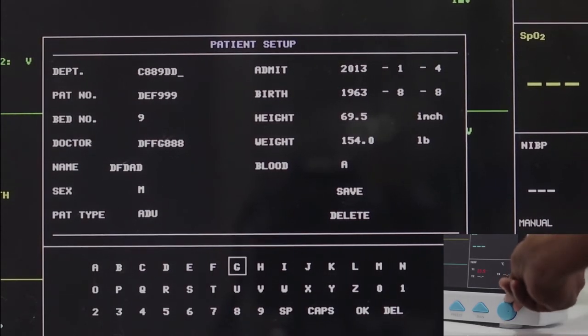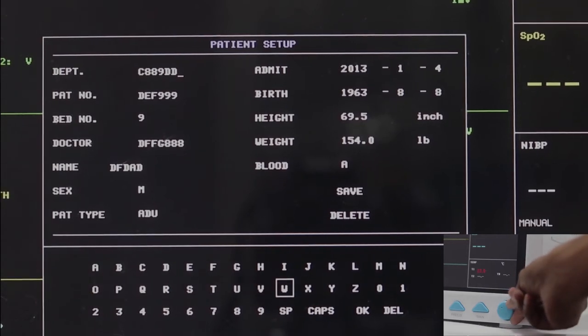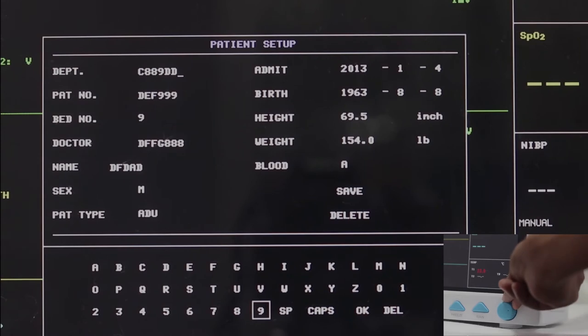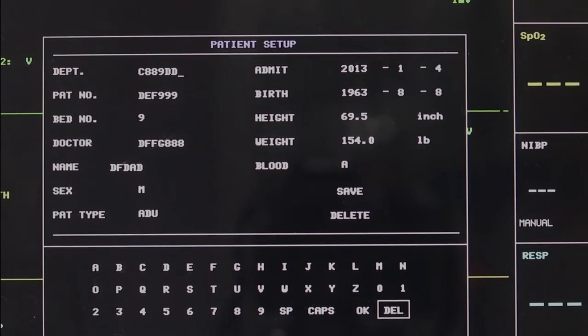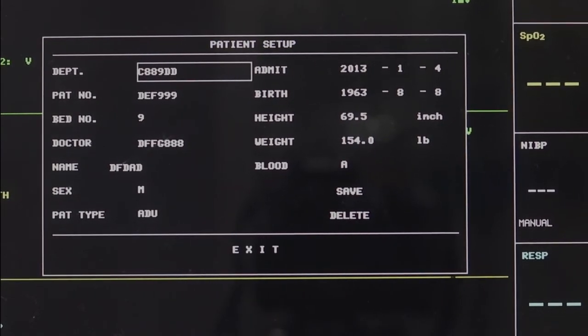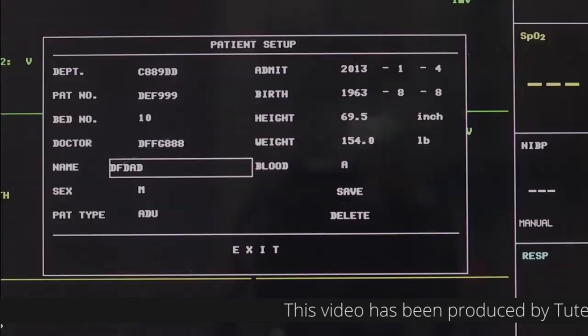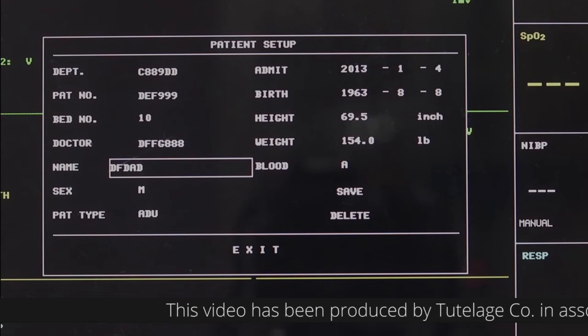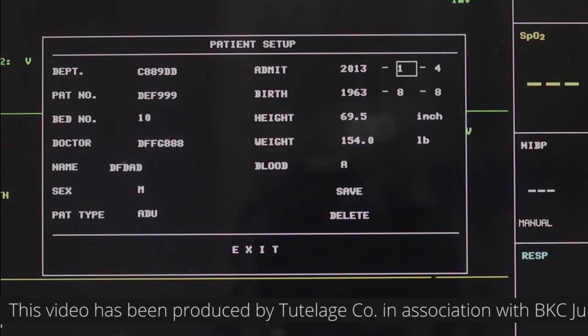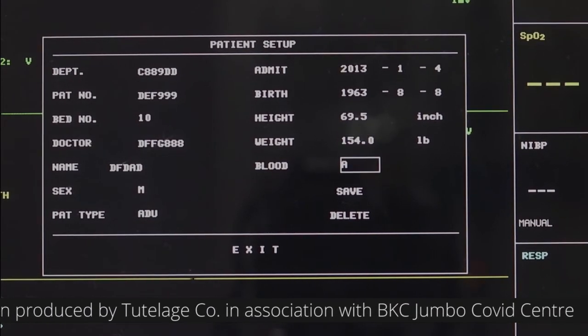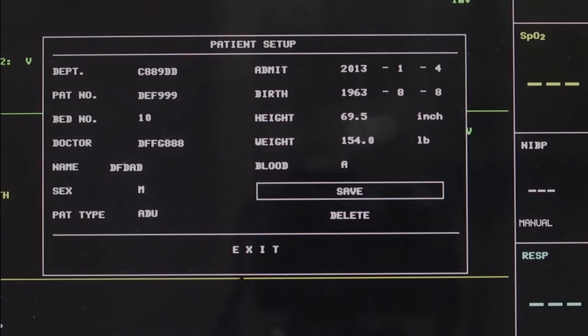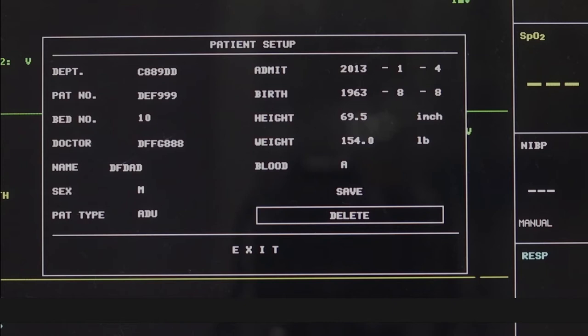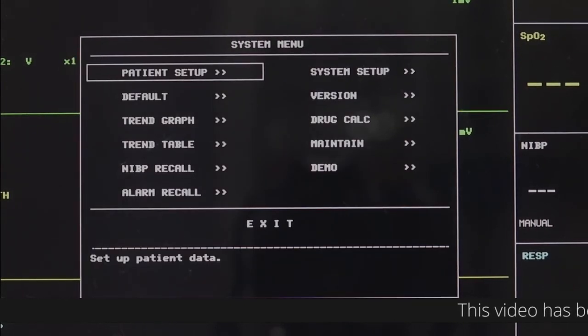You can edit Department, Patient Number, Bed Number, Doctor Name, Patient Name, Sex, Patient Type, Date of Admission, Date of Birth, Height, Weight, and Blood Type. The Save option should be used to save or change or newly add data. The delete option should be used to initialize the patient setup menu. Click on exit to return to the system menu dialog box.